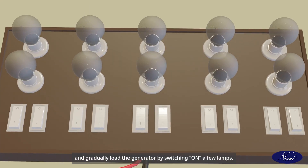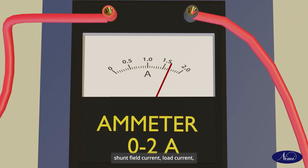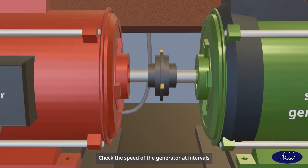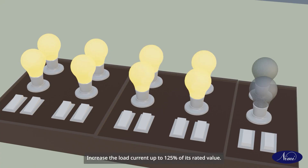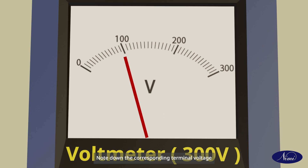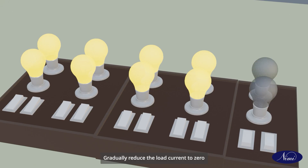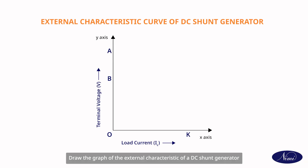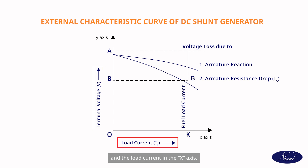Close the load switch and gradually load the generator by switching on a few lamps. Read the corresponding terminal voltage, shunt field current, and load current, and record them in tabulation. Check the speed of the generator at intervals and adjust it to the rated value. Increase the load current up to 125% of its rated value, noting down the corresponding terminal voltage and field current for each step. Gradually reduce the load current to zero and switch off the load circuit and the prime mover. Draw the graph of the external characteristic of the DC shunt generator, keeping the terminal voltage on the Y-axis and the load current on the X-axis.